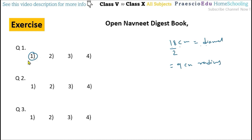Question number two: in the figure, O is the center of the circle. Which segment is not a chord? If you observe, DE is a chord, AOB is the longest chord (diameter), but OC is only the radius. CB is also a chord, AB is also the longest chord (diameter). So segment OC is not a chord. OC is given in option number three, which is the correct answer.